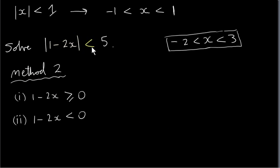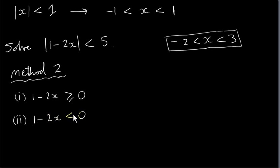Here is a second method for solving this inequality — we could consider two cases. One case is where one minus two x is positive or zero, and the other case is where one minus two x is less than zero. These are the only two cases; there are no others. For certain values of x, one minus two x would be greater than or equal to zero, and for certain other values, one minus two x would be less than zero.